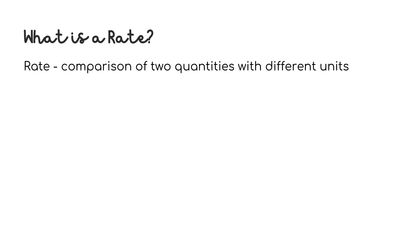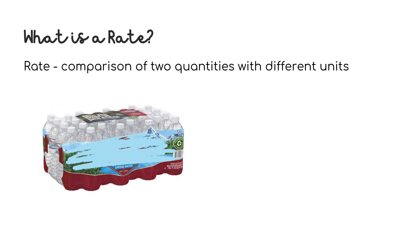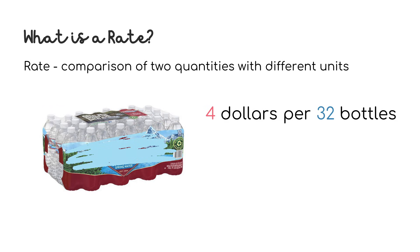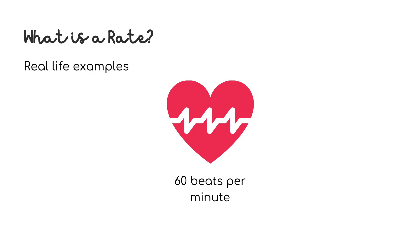You'll also commonly see rates that include money. For example, if you're at a store buying one of those huge packs of bottled water, let's say it costs $4 to buy a pack of 32 water bottles. So written as a rate, we have $4 per 32 water bottles, which we can also write as $4 over 32 water bottles. Another real-life example includes heart rate. If your heart rate is 60 beats per minute or 60 BPM, that means your heart actually beats 60 times every minute. If your heart starts beating faster during exercise or if you're anxious, your heart rate might go up to 100 or more beats per minute.